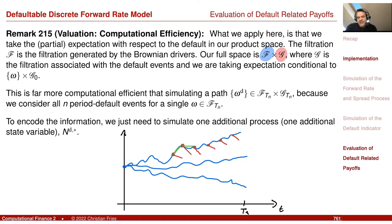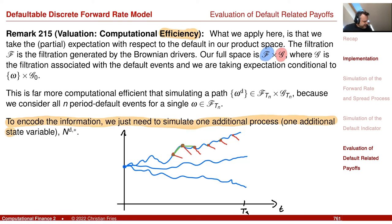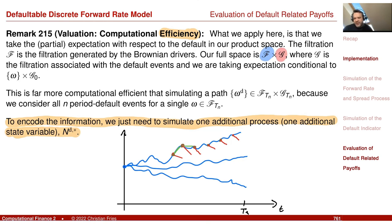That was the implementation. Many financial products just have a condition that something is paid if default has or has not occurred — no complicated function of the exact default time.